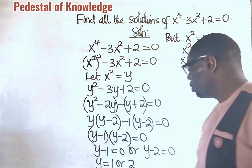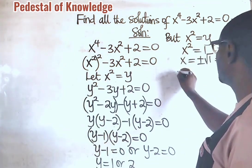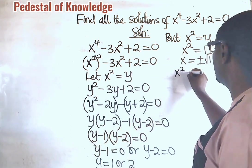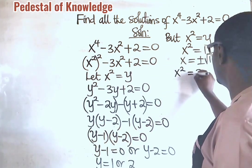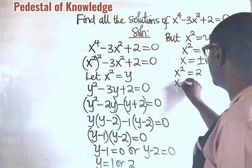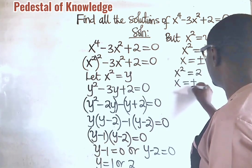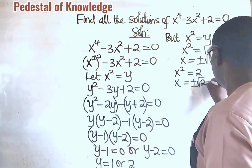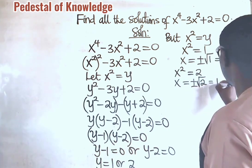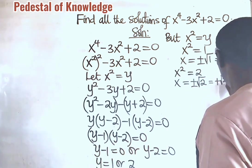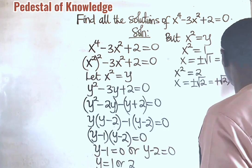When y is equal to 2, we go back here. It becomes x squared is equal to 2. So, from here, x is equal to plus or minus the square root of 2. And this is equal to plus root 2 or minus root 2.